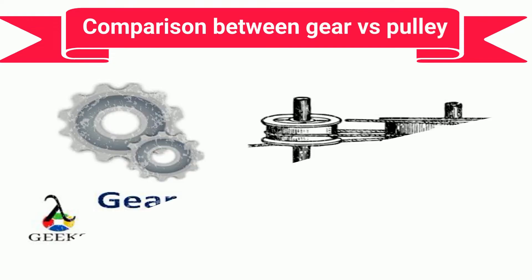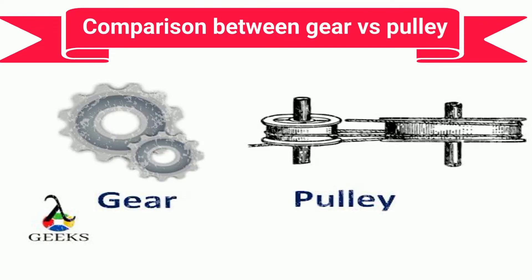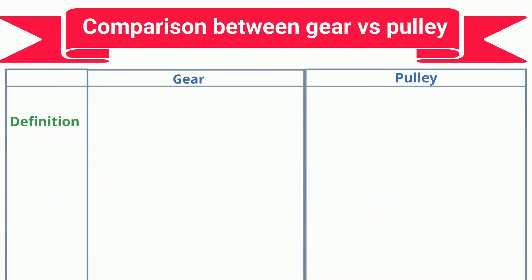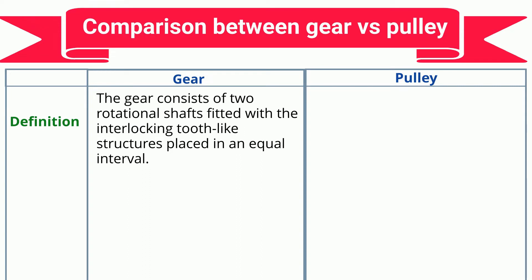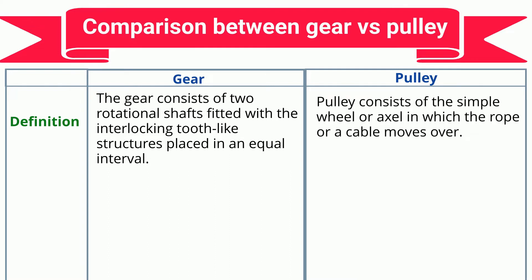Comparison between gear versus pulley. The gear consists of two rotational shafts fitted with interlocking tooth-like structures placed at equal intervals. A pulley consists of a simple wheel or axle over which a rope or cable moves.